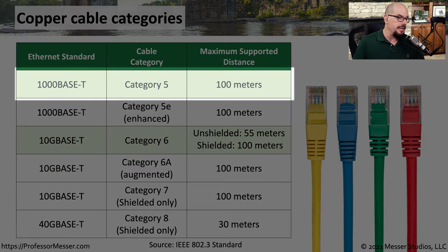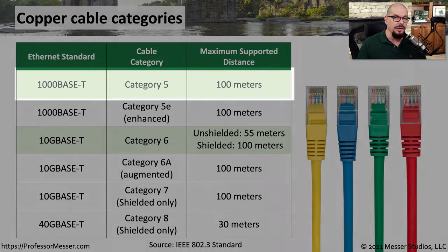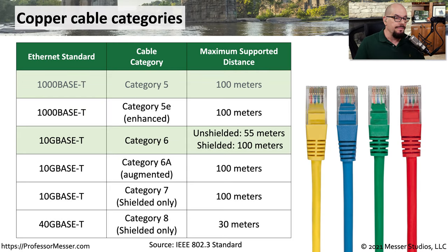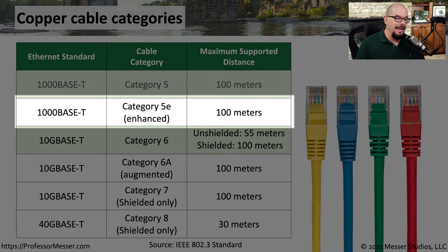For example, if you're using 1000BaseT, the IEEE 802.3 standard tells us that we could use Category 5 cables to send this gigabit ethernet connection to a maximum distance of 100 meters. This Category 5 cable is a type of category we no longer use. We've updated that category to Category 5e — the E stands for enhanced. So when you see 1000BaseT being used, we're using a minimum of Category 5e these days to go 100 meters.